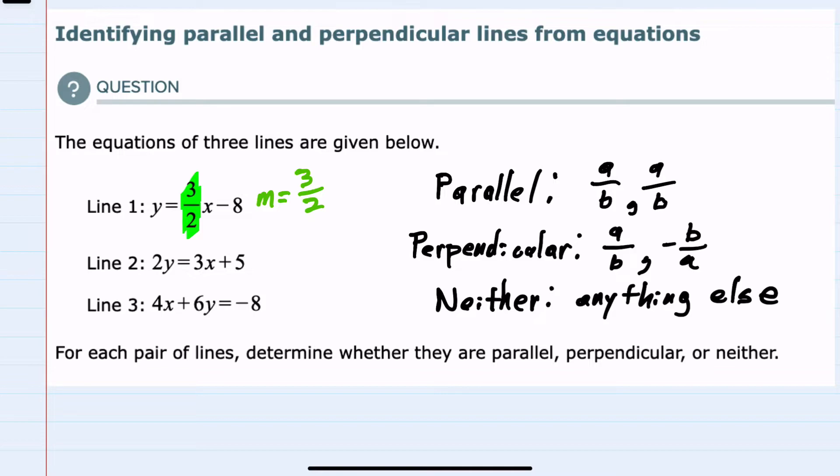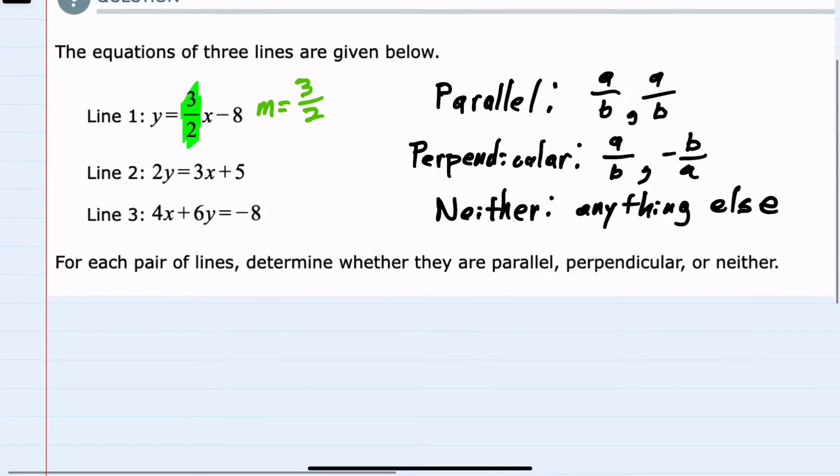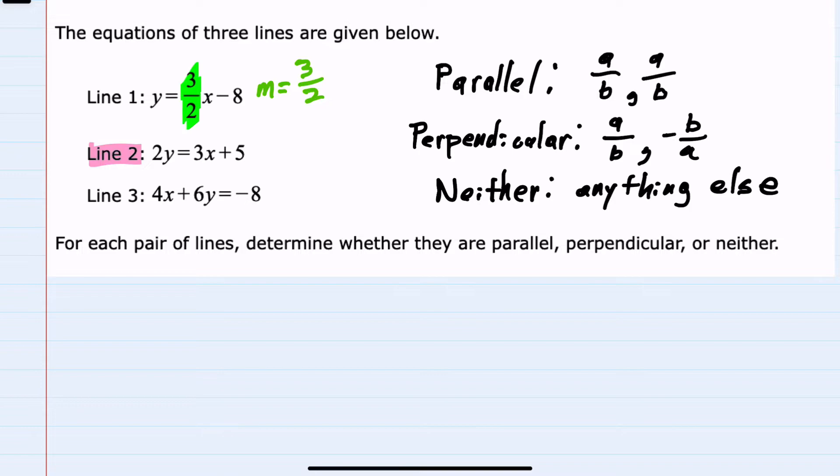For line two and line three, they are not in Y equals MX plus B form. So what I'm going to do is solve for Y. So here for line two, we have 2Y equals 3X plus 5.